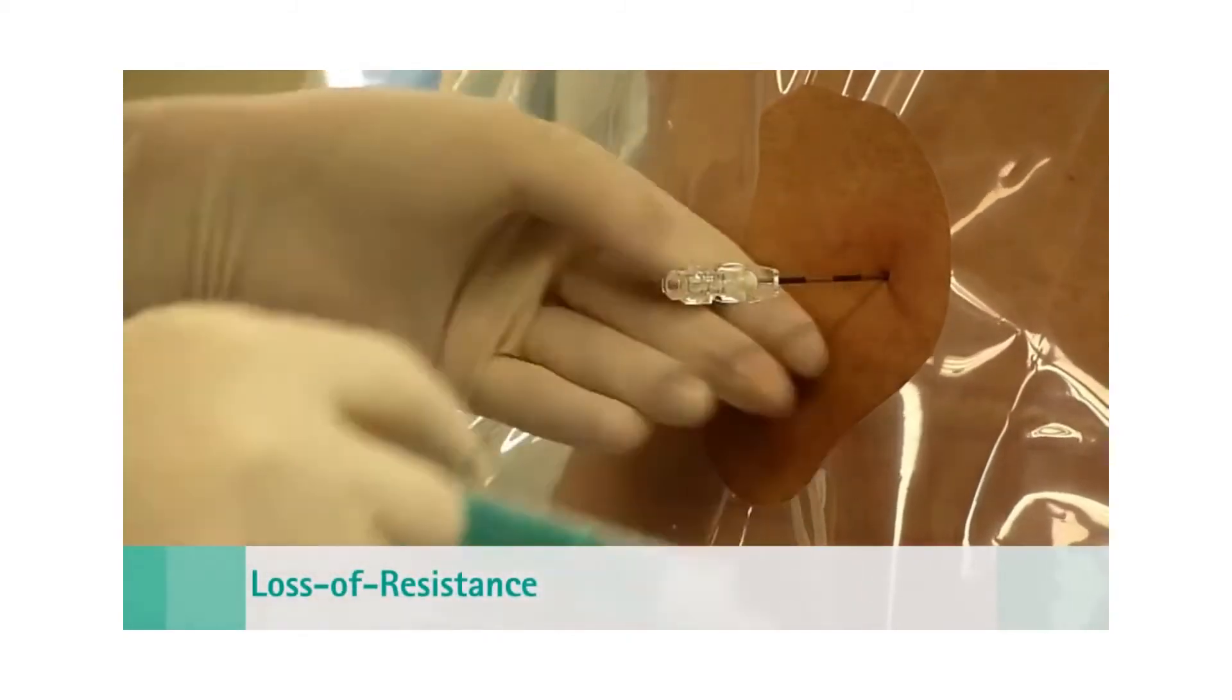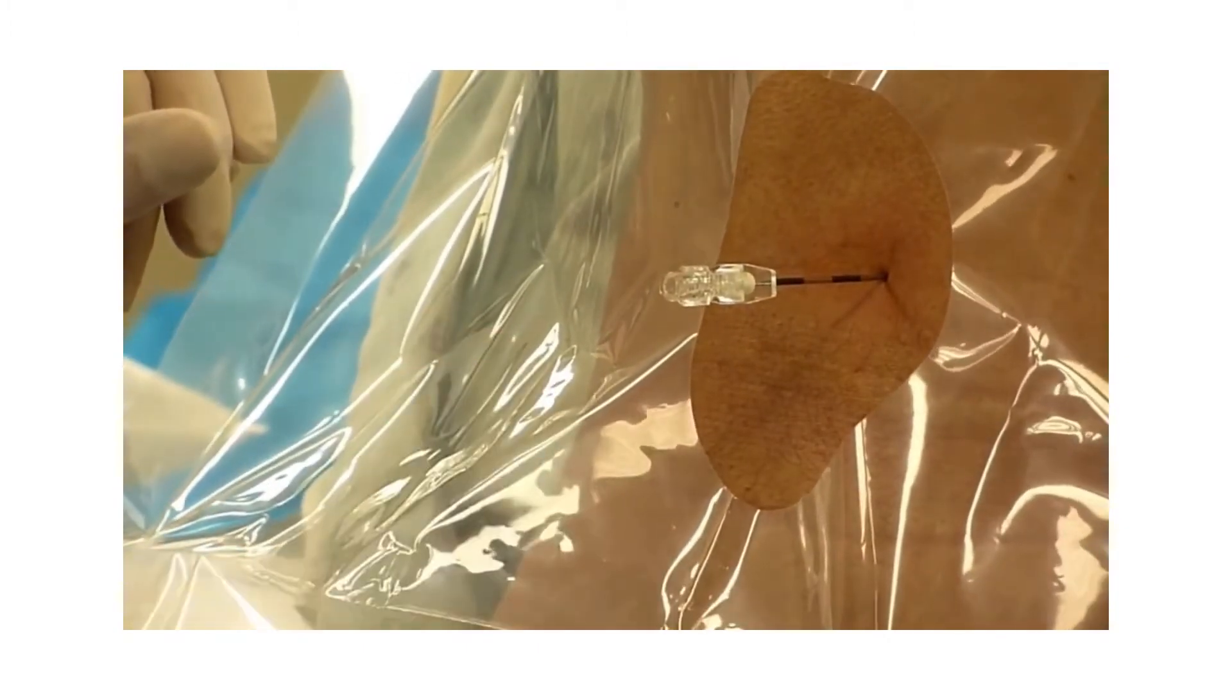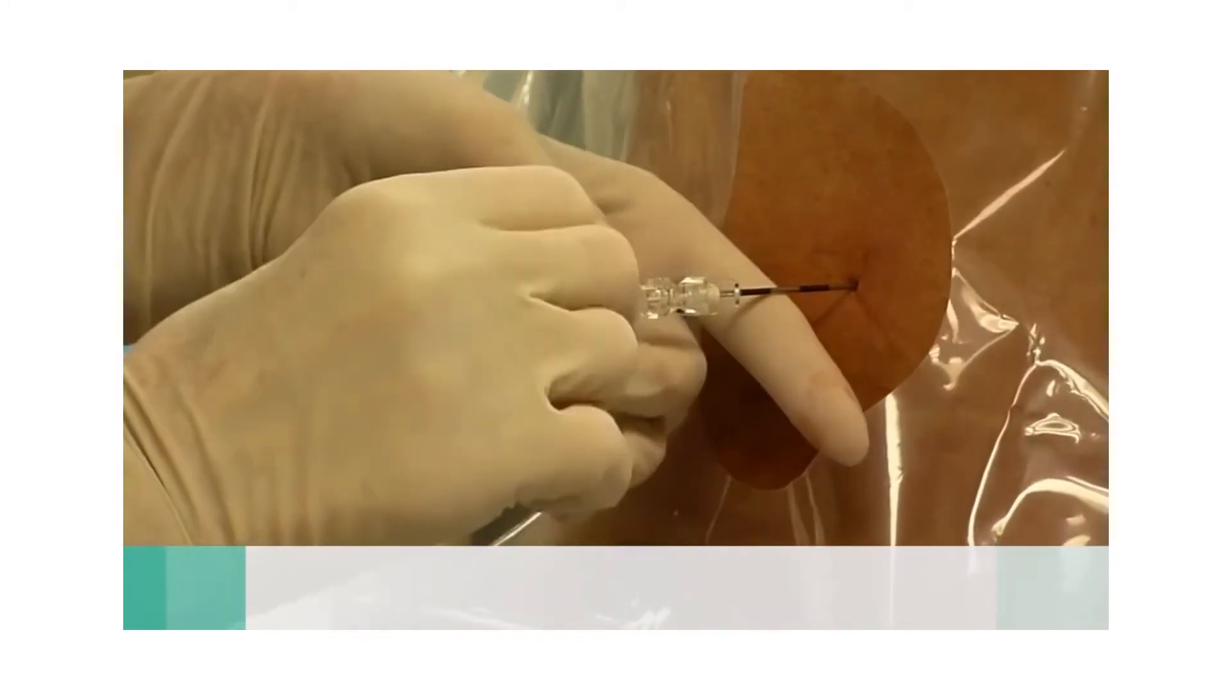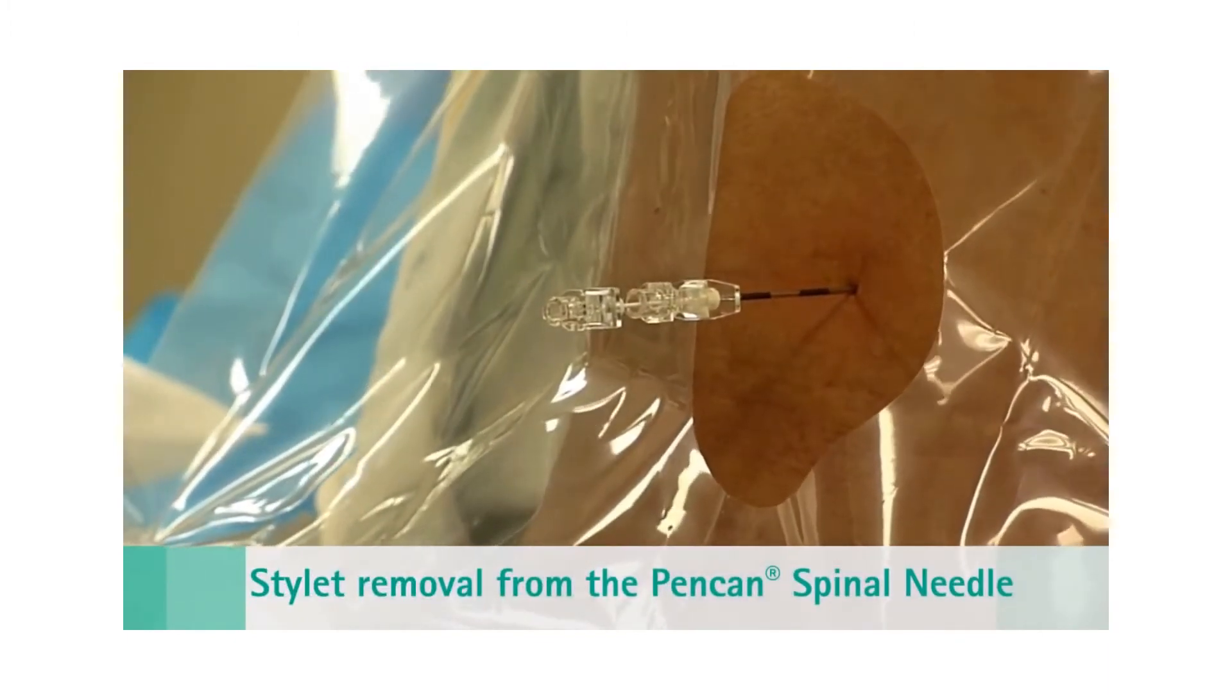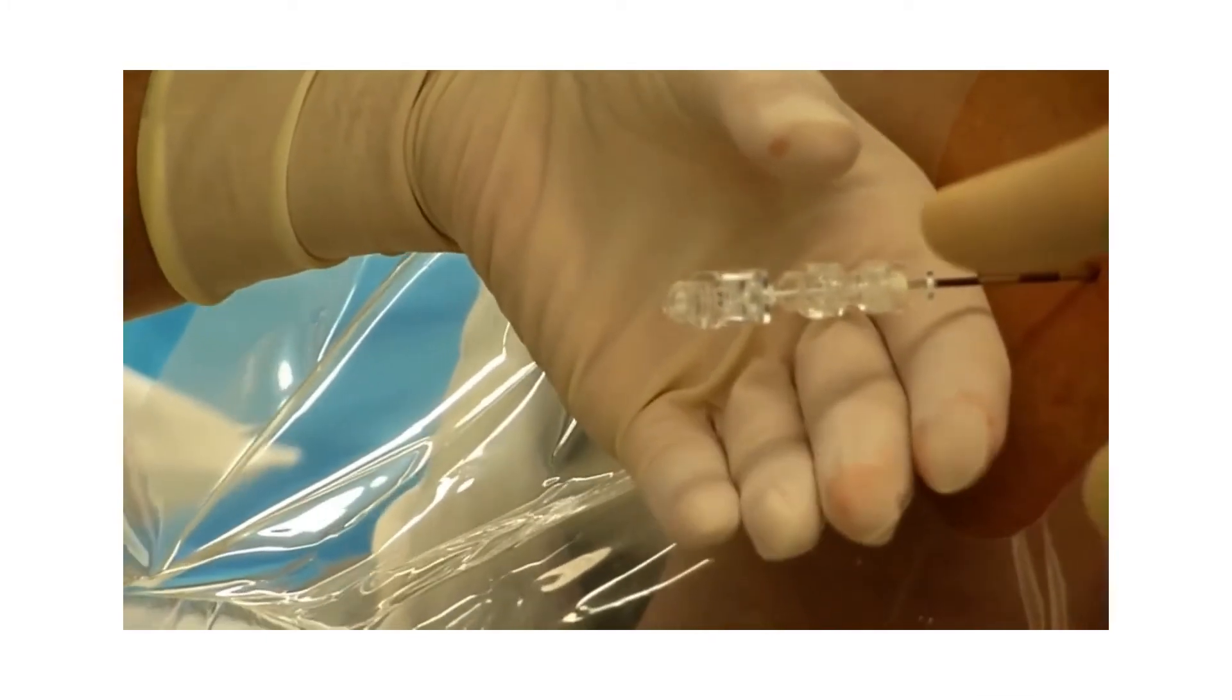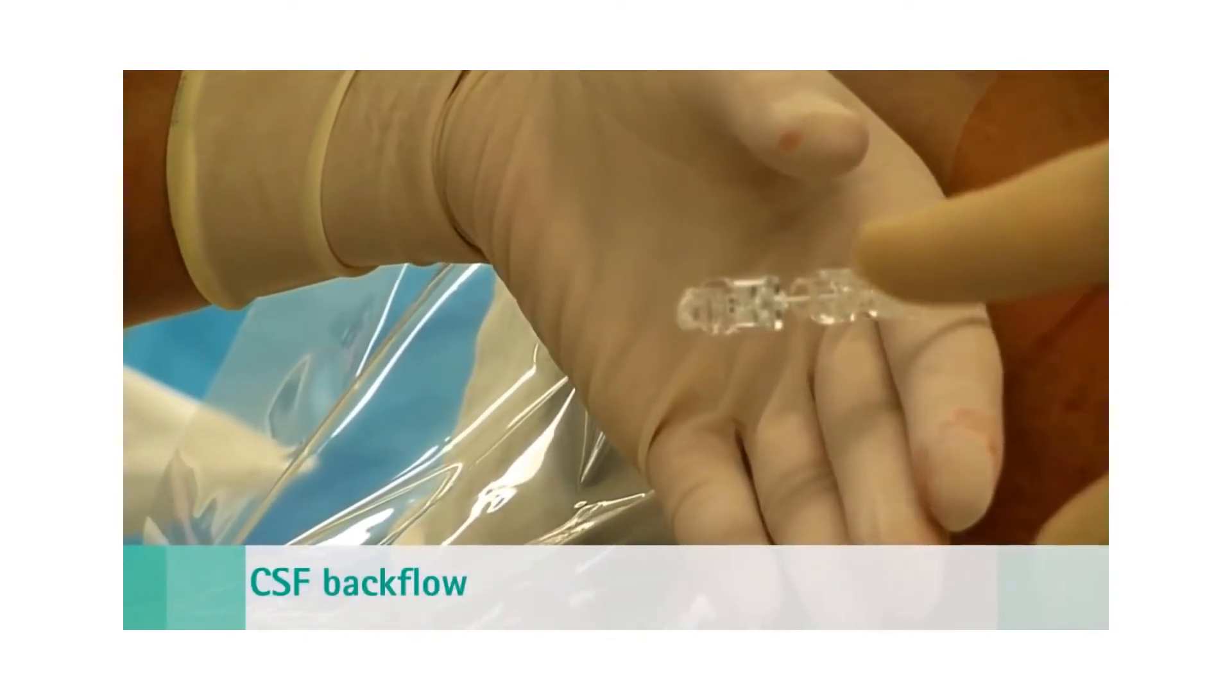As you can tell, there was a loss of resistance right there, which is exactly what we want. Now we're going to insert the Pencan spinal needle through the epidural needle and puncture the dura. And if you take a closer look, you'll see CSF coming out of the hub of the spinal needle, signifying that the spinal needle has punctured the dura and its tip is in the intrathecal space.